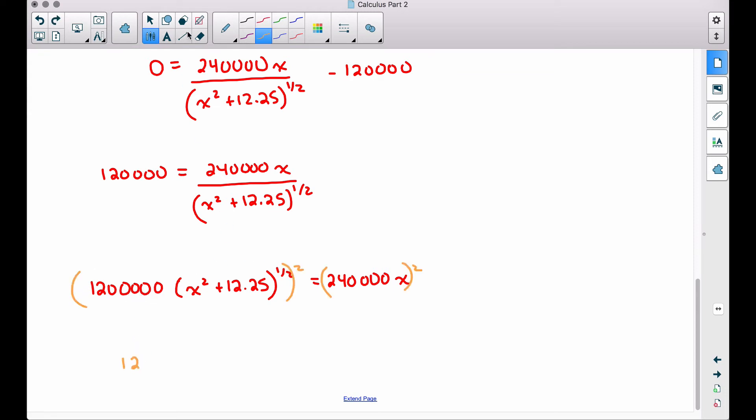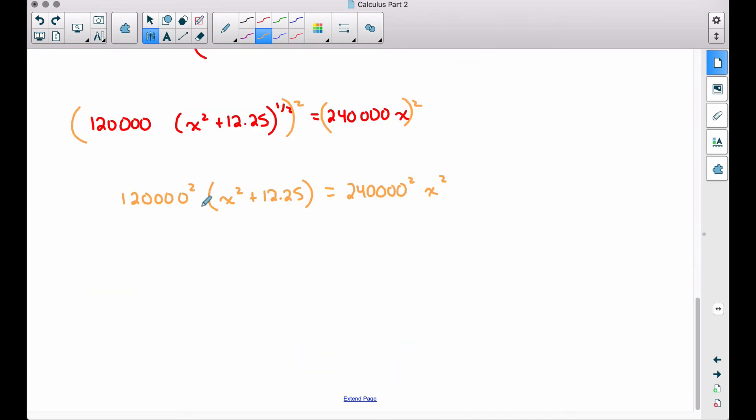I'm going to write this 120,000 squared as 120,000 squared. When we square this piece, we get rid of the rational exponent. Therefore, we have x squared plus 12.25. Over here, I'm just going to write 240,000 squared and an x squared. I just don't feel like getting a big number because these numbers are going to be gargantuan. But ultimately we're going to end up simplifying these anyway. From here, I'm going to distribute the 120,000 squared to the x squared and the 12.25. And now we can work on getting these x's on the same side. I'm going to subtract this over here, and then we can combine like terms on the right-hand side. And these numbers are still going to be really big, so I'm just going to write 240,000 squared minus 120,000 squared. And since these are like terms, we have the x squared right here.